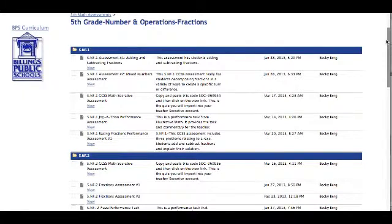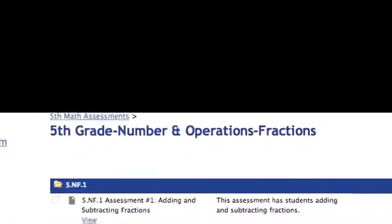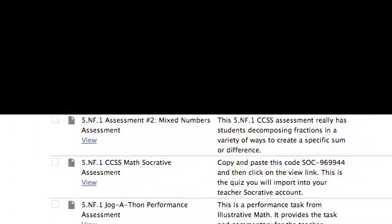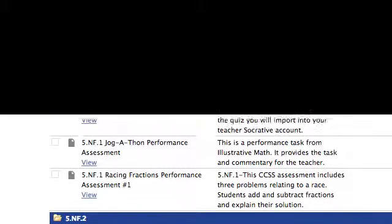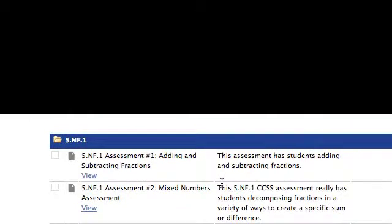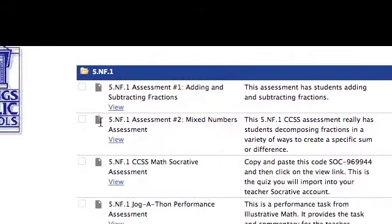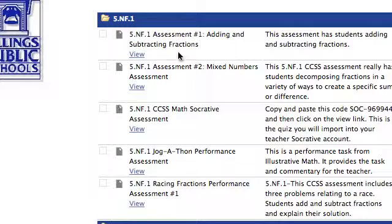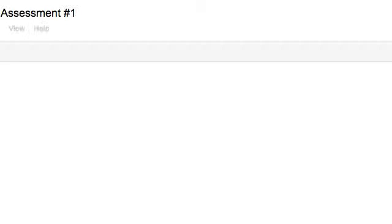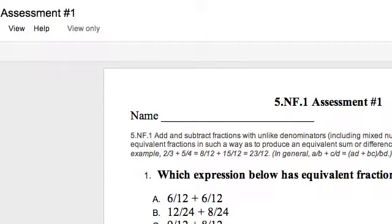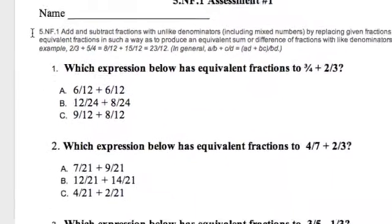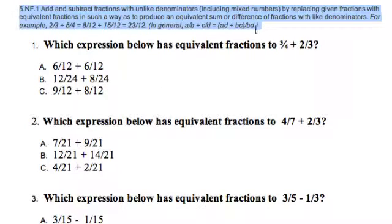Basically, for this domain, Numbers and Operations Fractions, you'll notice a blue heading for each particular standard, and then the assessments will be found underneath that. So let's take a look at the different types of assessments you'll have access to. You'll notice a gray icon next to these particular standards, and that's just going to let you know that it's in a Google Doc format. So if I click on View, it's going to open it up for me. So this is 5-NF1 Assessment 1. You'll notice that the standard is listed at the top. We've done that for each of these.